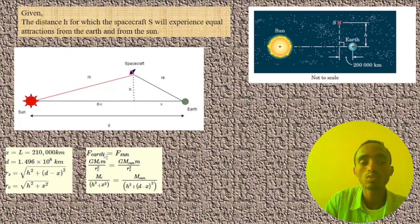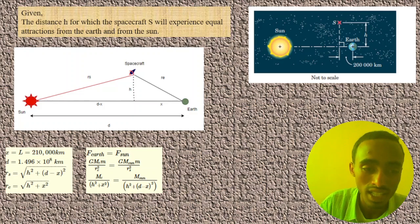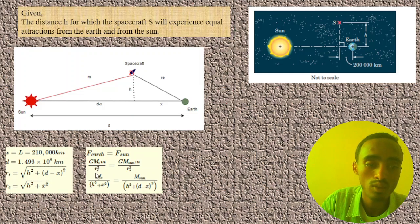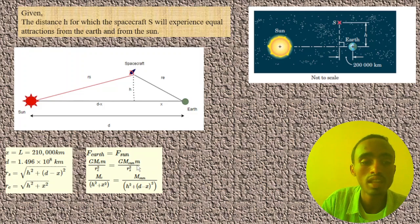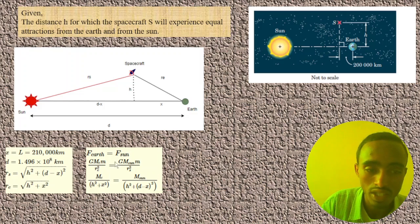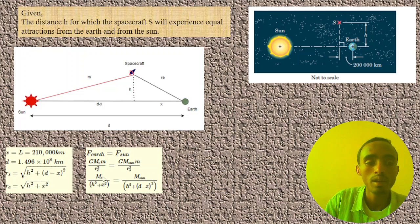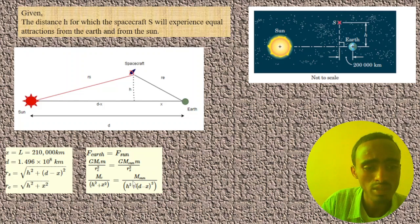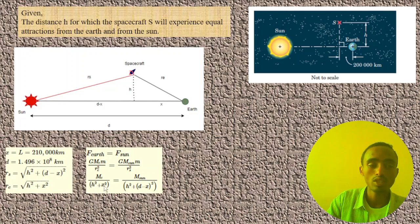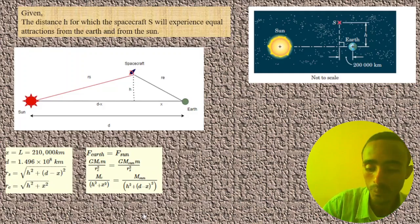Setting the gravitational forces equal: the force of attraction between Earth and the spacecraft equals the force between the Sun and the spacecraft. This gives G·M_Earth·m / RE² = G·M_Sun·m / RS². Canceling G and m from both sides, we get M_Earth / (H² + X²) = M_Sun / (H² + (D − X)²). Substituting RE = √(H² + X²) and RS = √(H² + (D − X)²) allows us to solve for H.